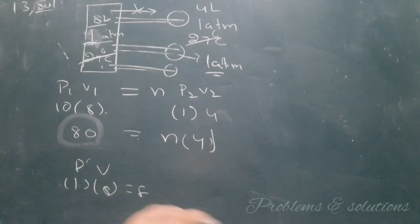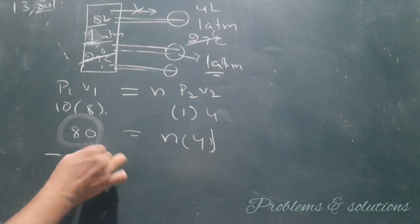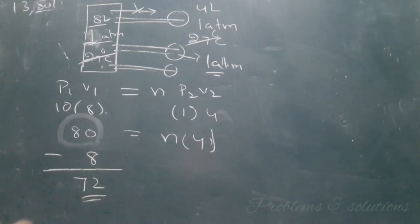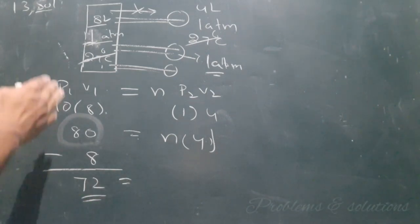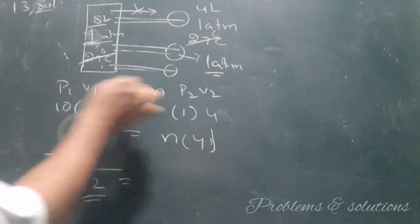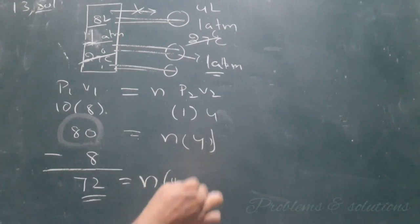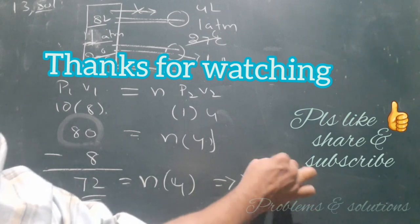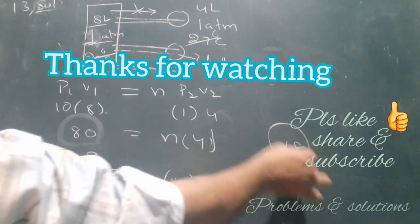So the initial is 80 and the remainder which remains in the container is 8. So how much amount can be transferred? That is 72. Now only 72, the amount of gas, will be transferred into balloons. So equate this value: 72 equals n times P2V2. What is P2V2? Here, 4. So n equals 72 by 4, it will be 18. 18 balloons can be filled. Thank you.